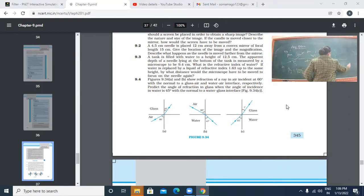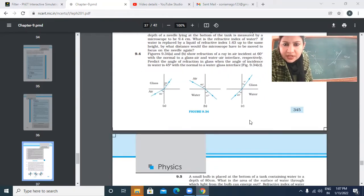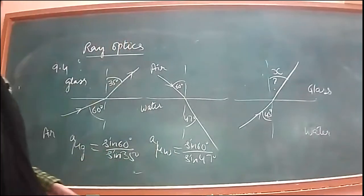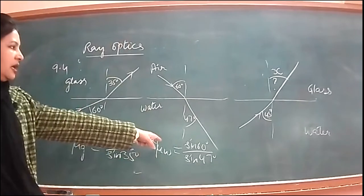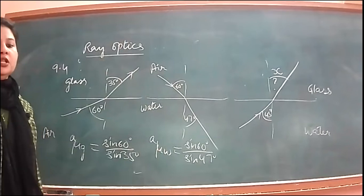In the third diagram, this is water and this is glass. The angle is 45 degrees and they are asking for the other angle. Let us call this angle x. Predict the angle of refraction in glass when angle of incidence in water is 45 degrees with the normal to a water-glass interface. In the first case, I applied Snell's law; in the second, the same. Now in the third case, using those values, we have to find x, that unknown value of angle of refraction.